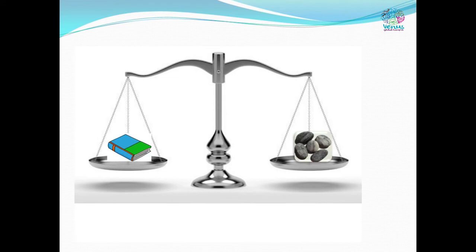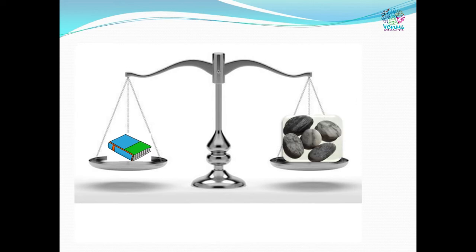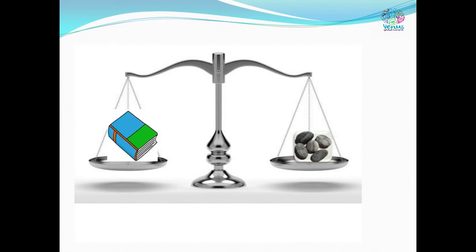Similarly, here one textbook is equal to five stones — both pans are at the same level. So one textbook weighs as much as five stones. But will the size of the stone be the same in every place? What will happen if the size of the stone is big or the size of the book is big? How will you measure the weight of the object then?